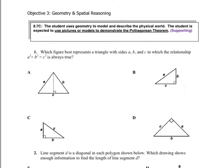Let's see, can we get going. First problem: which figure best represents a triangle with sides A, B, C in which the relationship A squared plus B squared equals C squared is always true? Problem number one, again pause it, write the question, then come back.